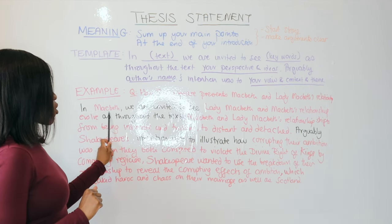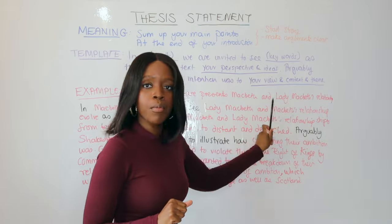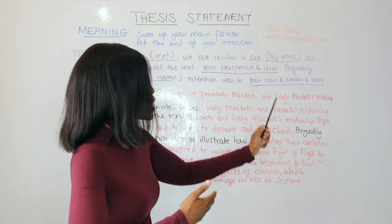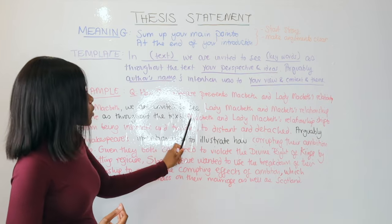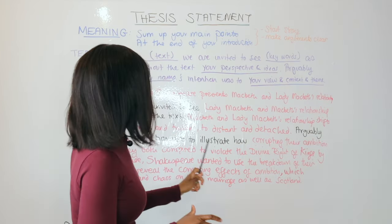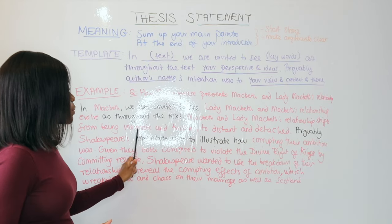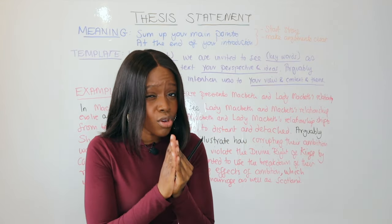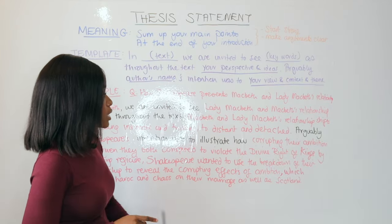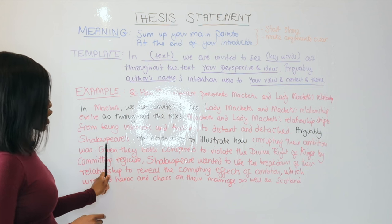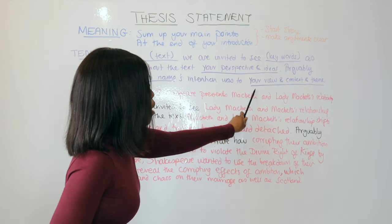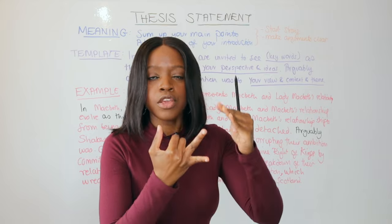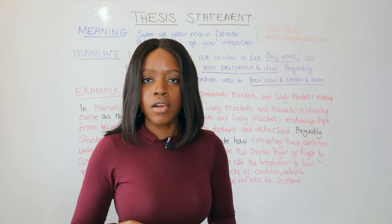Let's dissect how I've included the different elements. I began with 'In Macbeth' — the name of the text. Then 'we are invited to see' — followed by the keywords from the question: Lady Macbeth and Macbeth's relationship evolving. That's the keywords covered. 'Throughout the text' introduces my perspective and ideas: their relationship shifts from intimate and trusting to distant and detached. That's my general overall perspective. But I still need to include the remaining elements — 'arguably, Shakespeare's intention was to illustrate' — and now I add my view, context, and theme.